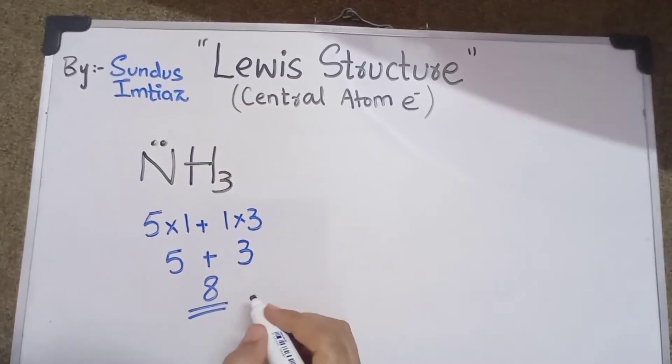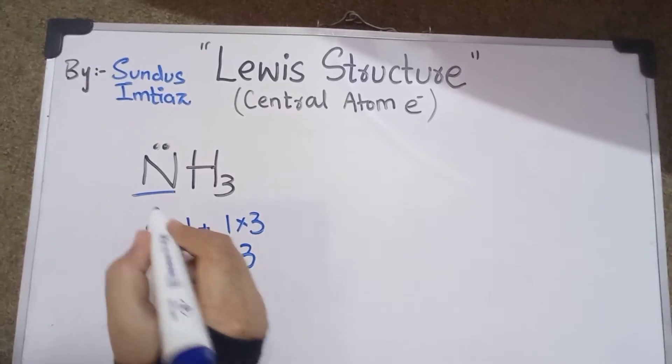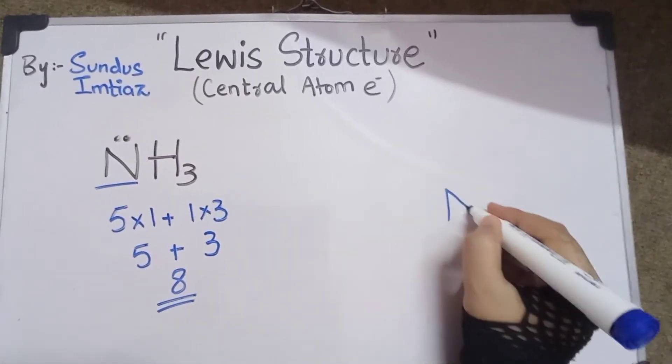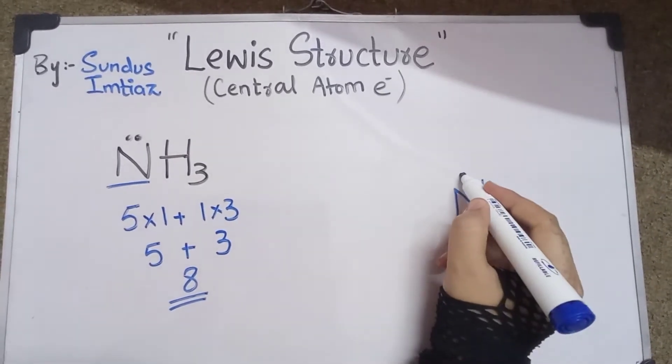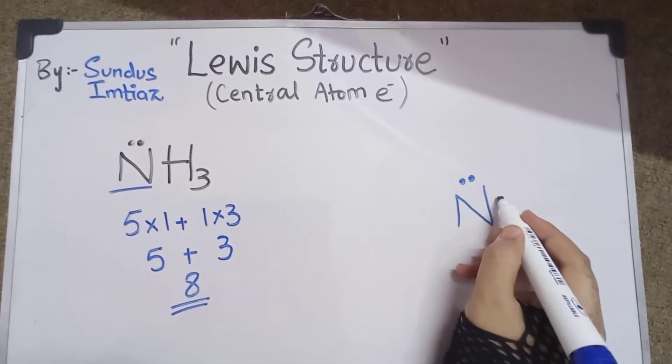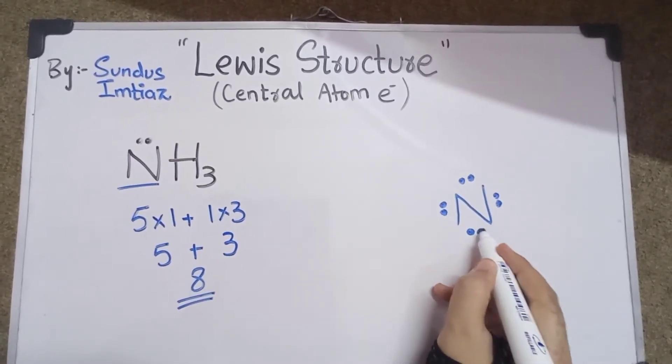Now nitrogen is the central atom here, so let's draw its structure. First of all, we know that nitrogen has 8 electrons, so we will show one, two, three, four, five, six, seven, eight. Okay, eight electrons.